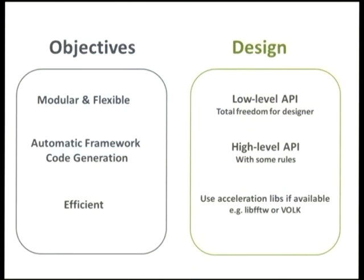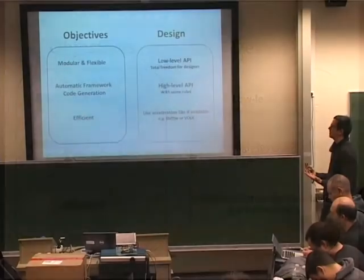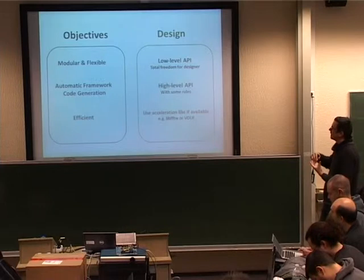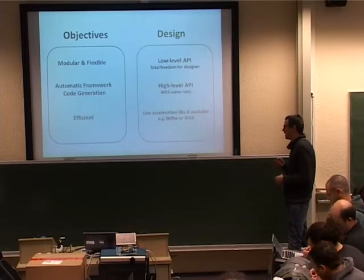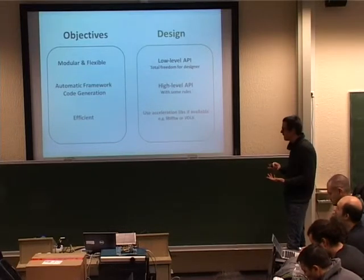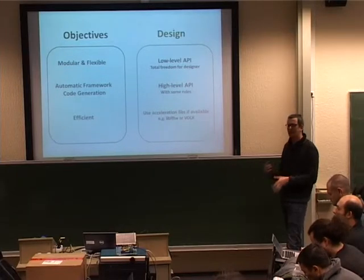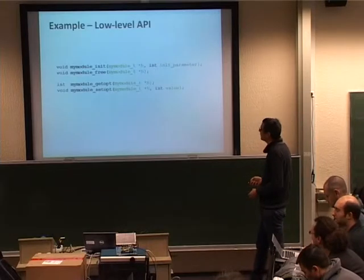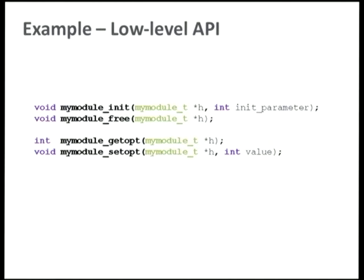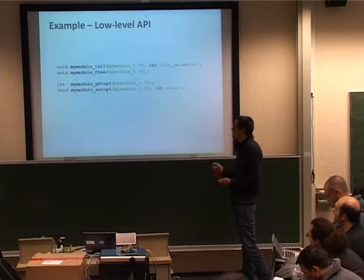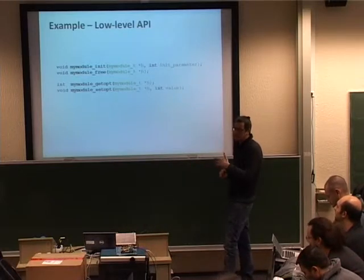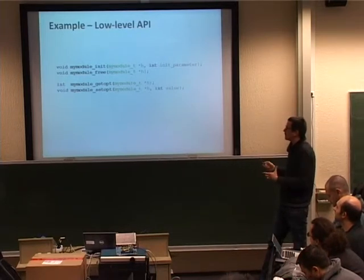At the low-level API, we don't impose any rules on the designer. The designer can implement the DSP block as they want. Then we define a high-level API where we do specify some rules. The idea is not to avoid well-known libraries like FFTW or VOLK, but if they are available on the system, use them. This is an example of how the low-level API is defined — the programmer defines an initialization function to allocate memory, and you can set or get options. It's a typical interface without any restriction.